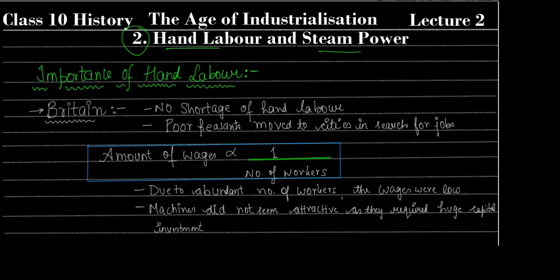First, let's understand the importance of hand labor. In Britain, hand labor was very important and very valued, because there was no shortage of hand labor in Britain. There were many workers abundantly available, easily accessible to industrialists. Poor peasants moved to cities in search of jobs, since industrialization and factory setup was progressing mostly in cities.